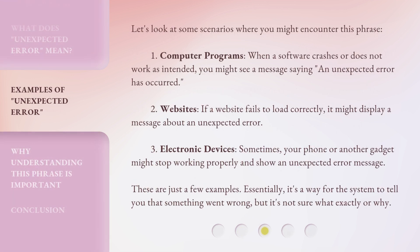Let's look at some scenarios where you might encounter this phrase. First, computer programs: when a software crashes or does not work as intended, you might see a message saying, 'An unexpected error has occurred.' Second, websites: if a website fails to load correctly, it might display a message about an unexpected error. Third, electronic devices: sometimes your phone or another gadget might stop working properly and show an unexpected error message. These are just a few examples. Essentially, it's a way for the system to tell you that something went wrong, but it's not sure what exactly or why.